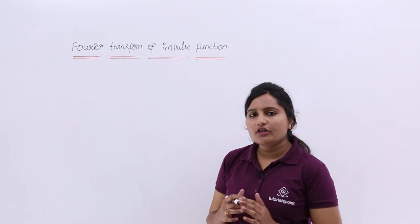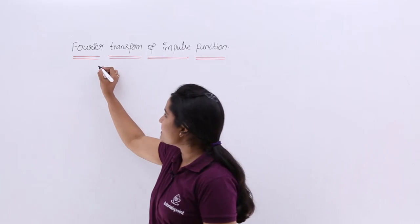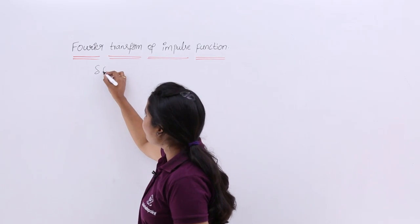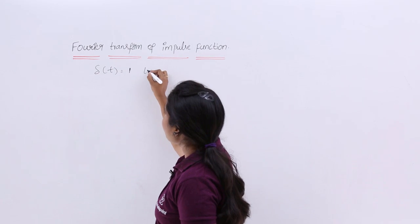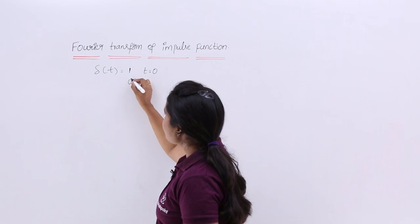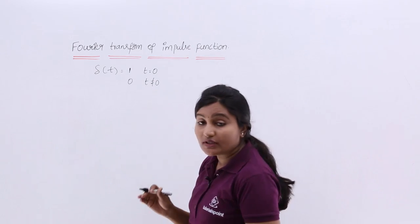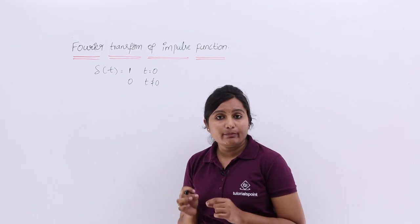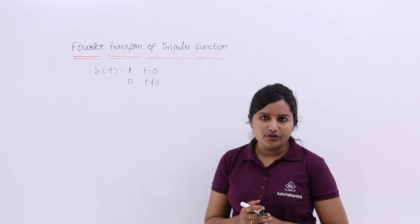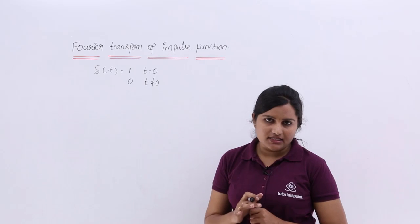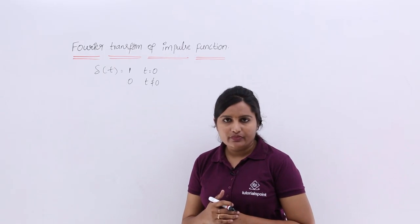First, let's recall the impulse function, generally represented as δ(t). It is equivalent to 1 at t = 0, and equivalent to 0 when t is not equal to 0. That means the impulse function has a value only at t = 0; in all other cases it is 0.